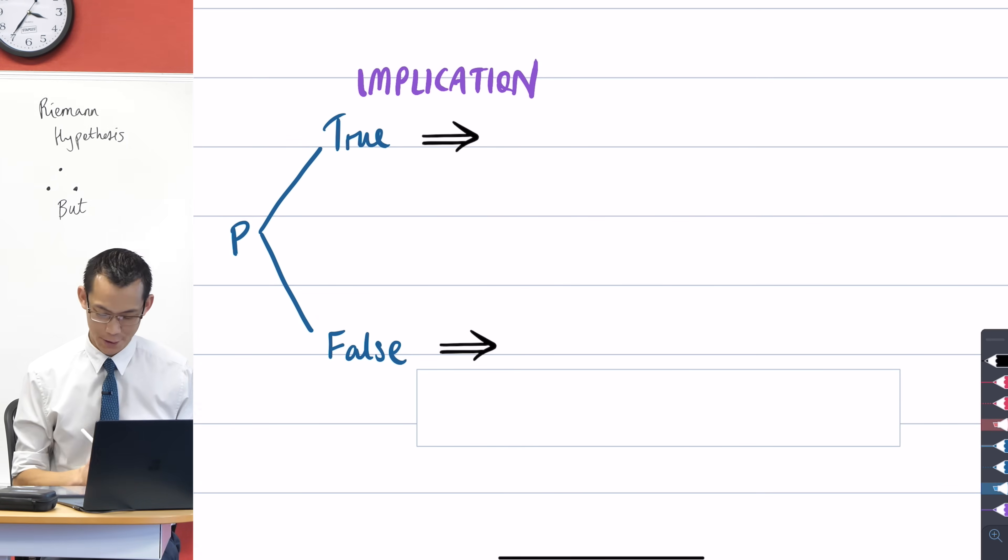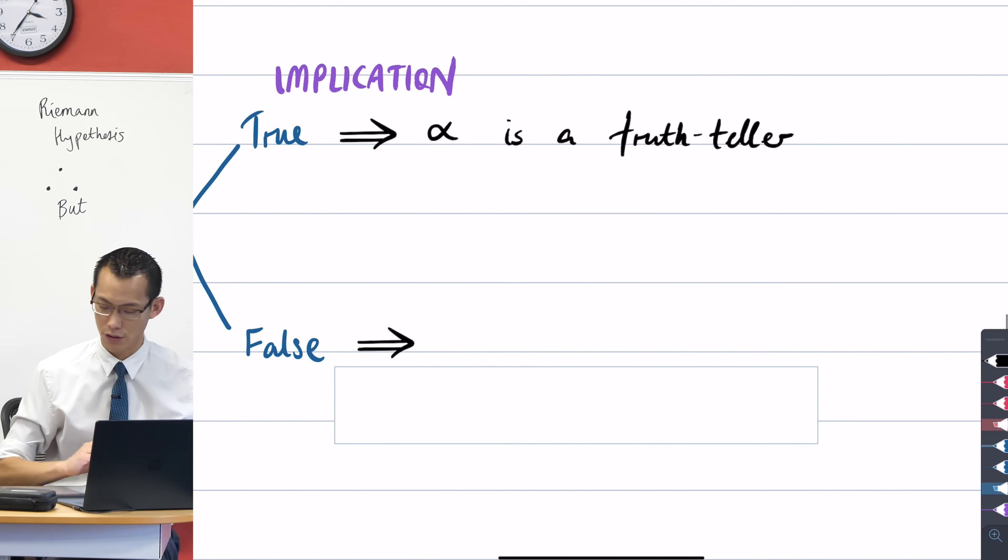So for starters, if the statement is true, P is true, we know that on this island, who are the people who tell the truth? They're all truth-tellers. So if this statement is true, the first implication I can see is that alpha is a truth-teller, because only truth-tellers tell truth.